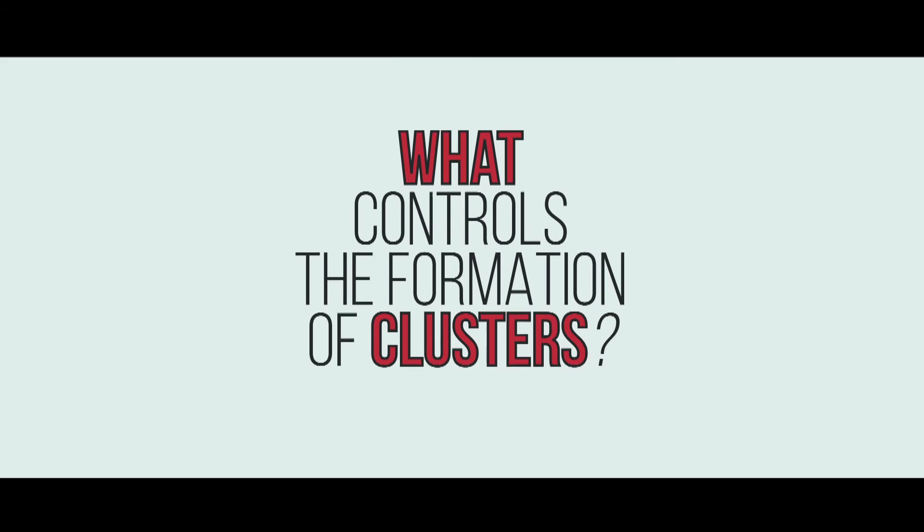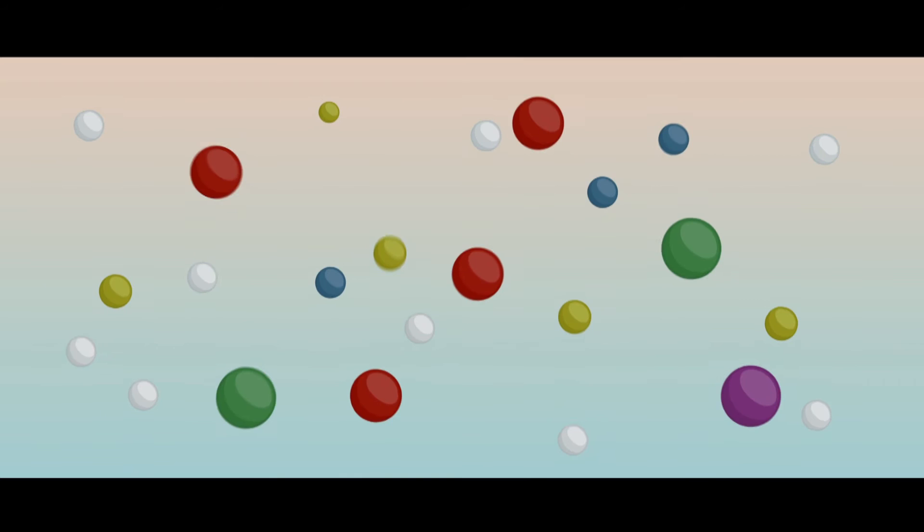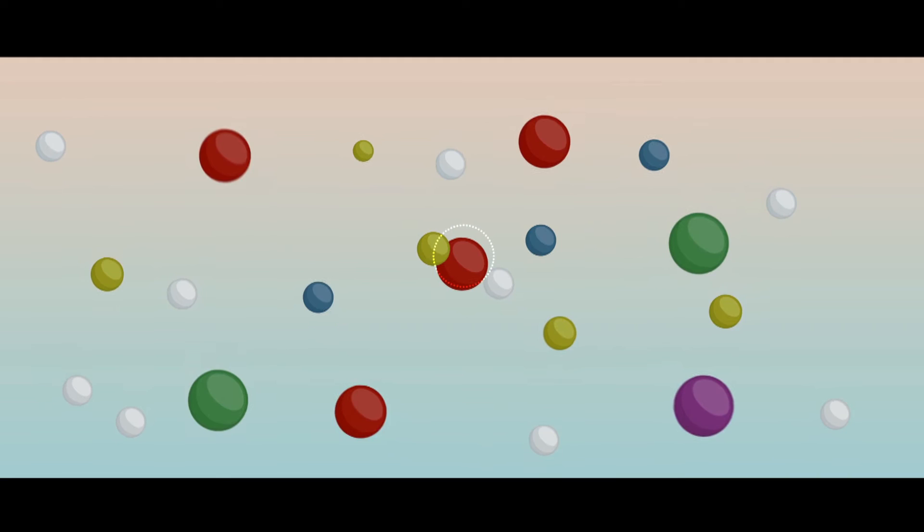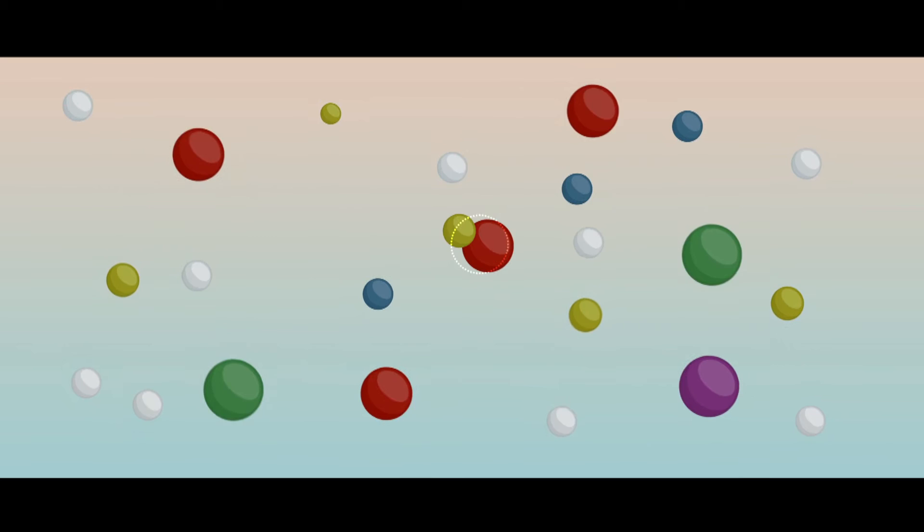At the very beginning, when the cluster consists of only a few molecules, it has a strongly curved surface, which cannot hold the molecules very well. So, every molecule has a significant likelihood to re-vaporize, and the cluster will usually decay again.